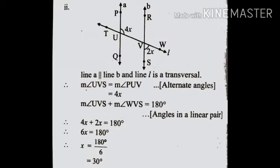Now in question number 1, second sum. To solve this sum, we have taken a few points on the lines. Here, measure of angle UVS is equal to measure of angle PUV as they are alternate angles. According to the property of alternate angles, the measures of alternate angles are the same. Therefore, measure of angle UVS is equal to measure of angle PUV, which is equal to 4X.